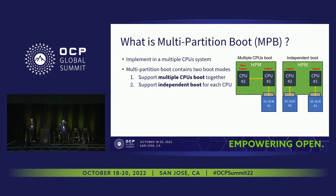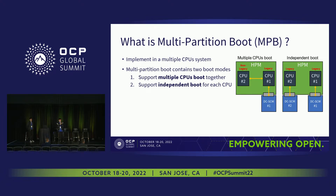In the multi-partition boot case, we will have two kinds of boot modes, and we can switch between them. The first one is the multi-CPU boot mode, where all CPUs boot up together. The other option is the independent boot mode — as you can see in the picture on the right, you can plug in two or more DCSCMs, and each DCSCM can power up its own CPU. In multi-CPU boot mode, only one DCSCM powers the whole system, with a legacy CPU and non-legacy CPUs. In independent boot mode, each DCSCM powers its own CPU, meaning each CPU can be the legacy CPU.